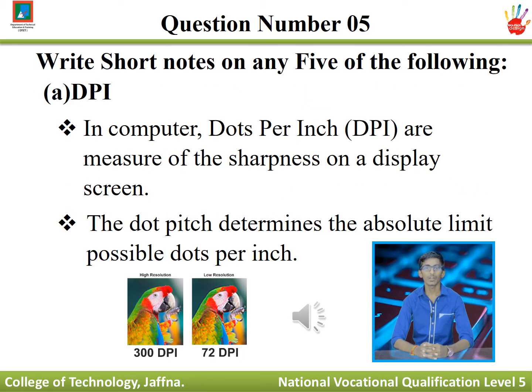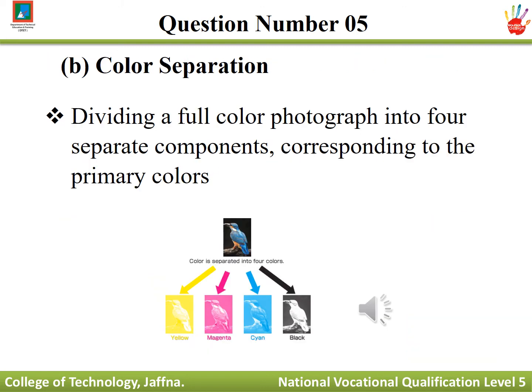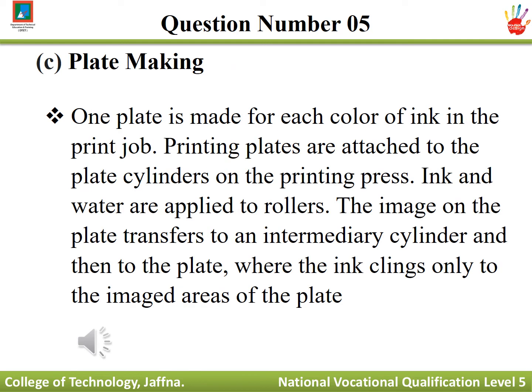Question number five: write short notes on the following. DPI — dots per inch is a measure of sharpness on a display screen; the dot pitch determines the absolute limit of possible dots per inch. Color separation — dividing a full color photograph into four separate components corresponding to the primary colors. Plate making — one plate is made for each color of ink in the printing job; printing plates are attached to the plate cylinders on the printing press; ink and water are applied to rollers; the image on the plate transfers to an intermediary cylinder and then to the paper, where the ink clings only to the image area of the plates.